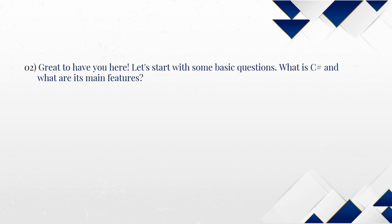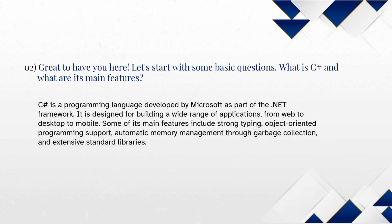Great to have you here. Let's start with some basic questions. What is C-Sharp and what are its main features? C-Sharp is a programming language developed by Microsoft as part of the .NET Framework. It is designed for building a wide range of applications from web to desktop to mobile. Some of its main features include strong typing, object-oriented programming support, automatic memory management through garbage collection and extensive standard libraries.